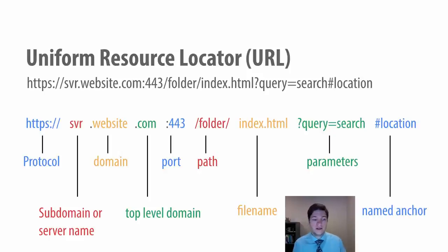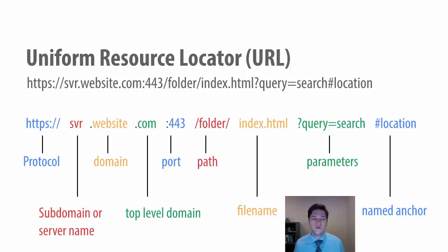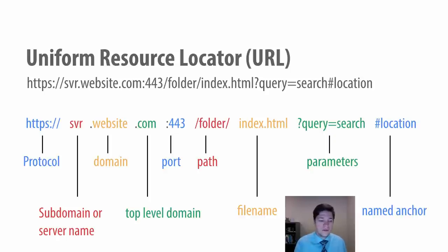We need a server name to access a single computer. Google is a massive company with thousands of servers — you need to tell it which one you want to access. This is also called a subdomain. For example, 'www' is a subdomain of Google, because everyone has a www server — a web server — and you're specifying whose web server you want.